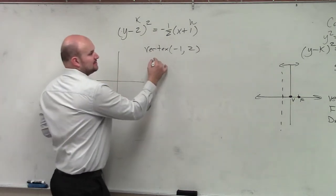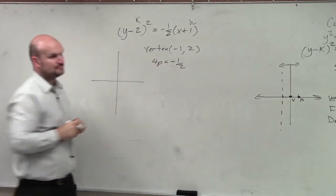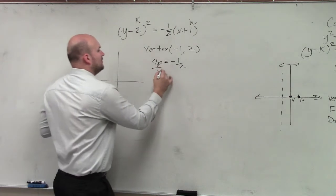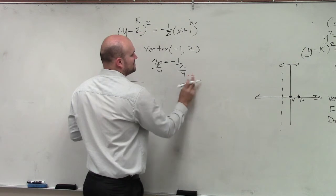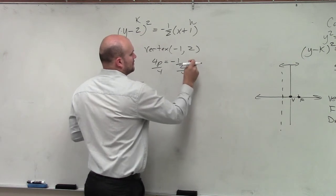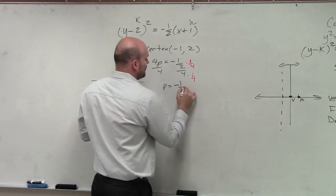Then we've got to figure out p. So I'd say 4p is equal to a negative 1 half. Divide by 4, divide by 4. You could multiply by the reciprocal, which I've taught many, many times. And you get p is equal to a negative 1 over 8.